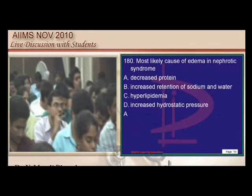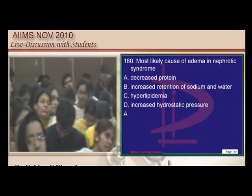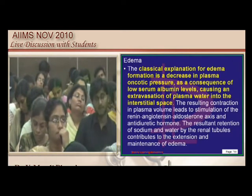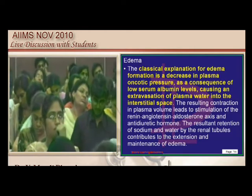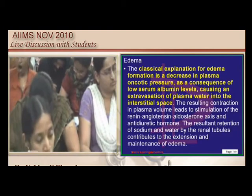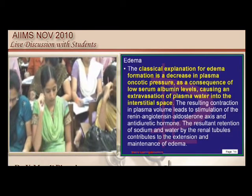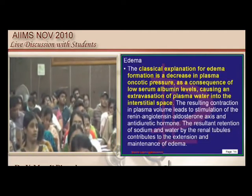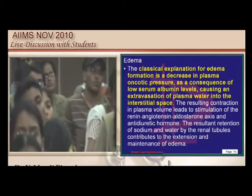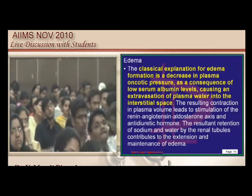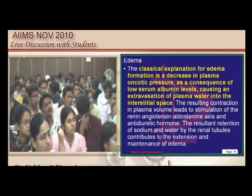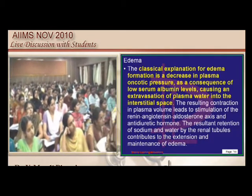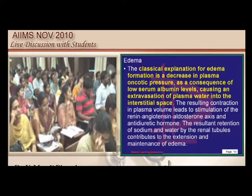In nephrotic syndrome, there are two hypotheses for edema: the underfill hypothesis and the overfill hypothesis. The underfill hypothesis states that low serum albumin leads to low oncotic pressure, imbalancing Starling forces and causing fluid to move out of vessels. Normally in fluid overload, the atria produce atrial natriuretic peptide (ANP) leading to natriuresis and salt loss.